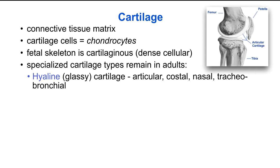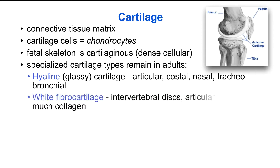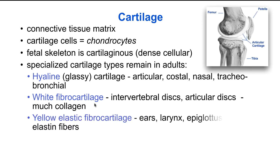and tracheobronchial tissues. Then there's white fibrocartilage, which is found in the intervertebral discs and is higher in collagen. And yellow elastic fibrocartilage found in specialized structures such as the ears, larynx, and epiglottis, and are particularly rich in elastin fibers.